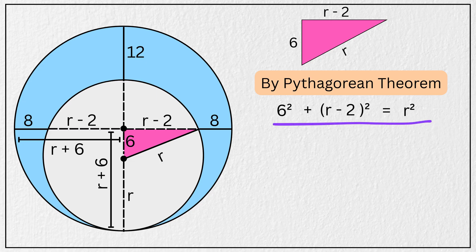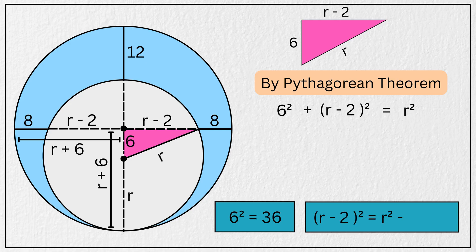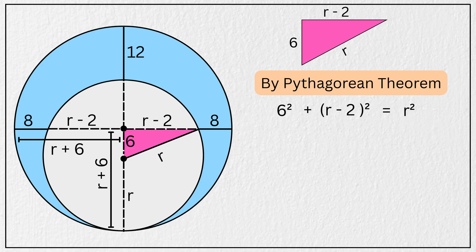6 squared is 36, and the square of r minus 2 is r squared minus 4r plus 4. So our expression becomes 36 plus r squared minus 4r plus 4 is equal to r squared.